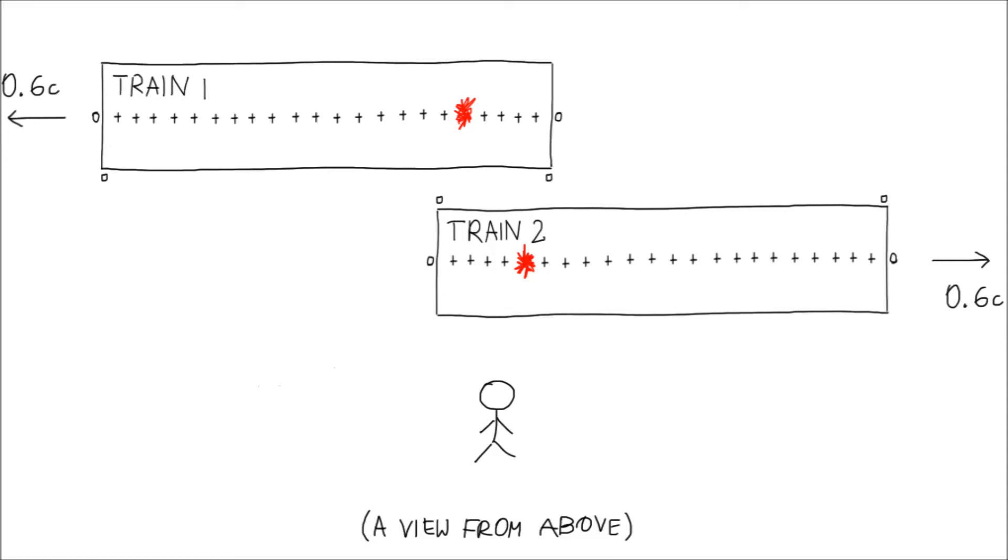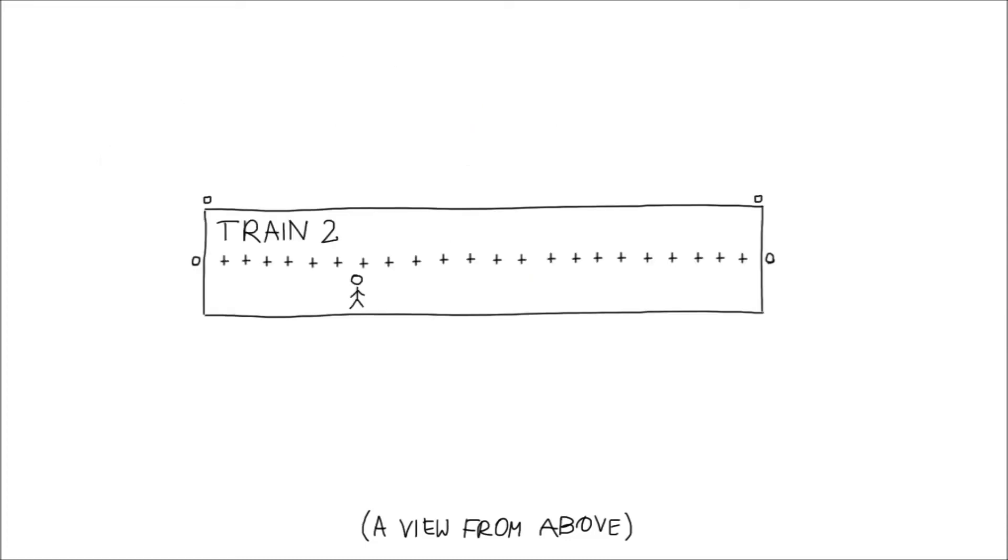This is exactly what a person riding on a train sees. The firecracker explosion occurred towards the back of the train, but the firecracker was activated by a sensor receiving two light beams simultaneously.